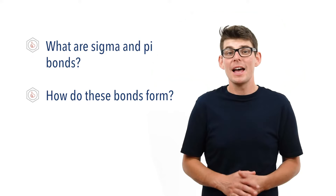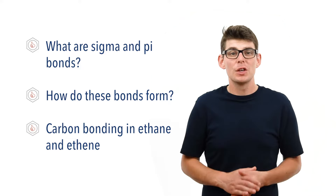Hello, Matt here from chemistrystudent.com. In this video we're going to look at sigma and pi bonds. We're going to talk about what sigma and pi bonding actually is, how sigma and pi bonds arise, and compare them both by looking at the carbon bonding in ethane and ethene.